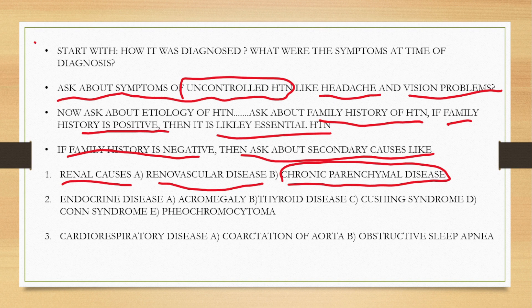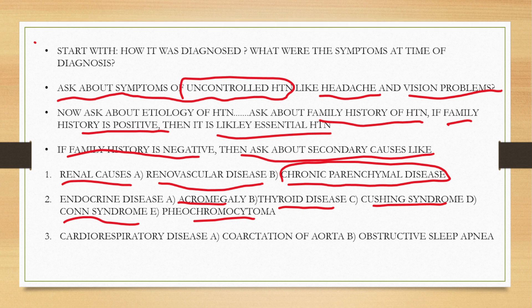Then we will ask about endocrine diseases, which include acromegaly, thyroid disease, Cushing syndrome, Conn's syndrome, and pheochromocytoma. These are the endocrine diseases which lead to hypertension. We must have a few targeted questions related to these endocrine disorders to ask the patient.